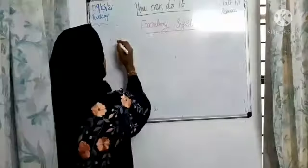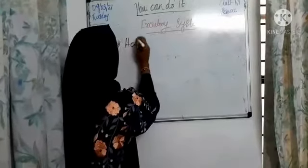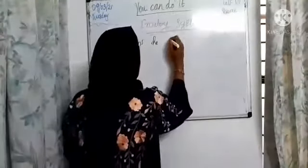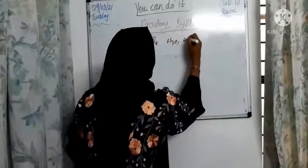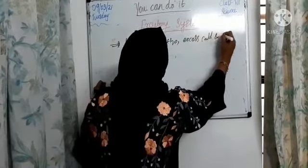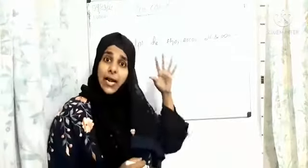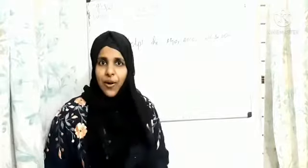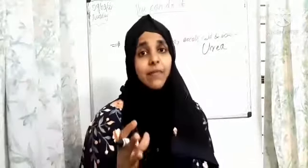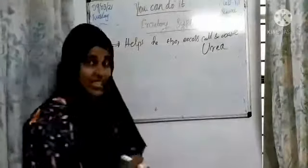Students, the excretory system helps to get rid of waste material like water, excess salt, and some waste. So the main function of the excretory system is it helps to get rid of waste material from our body. Our urinary system, or excretory system, consists of the following parts.